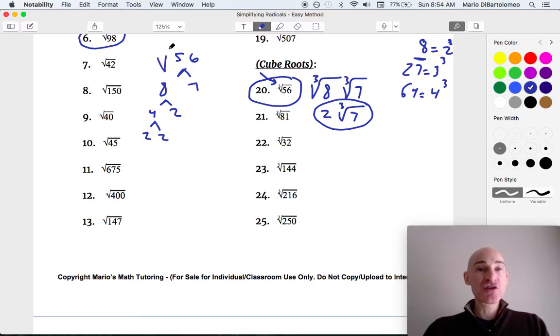And remember, when you're taking the cube root, you're looking for groups of 3 of the same number. So let's see, we've got a group of three 2's here. So that represents a perfect cube. So that's just going to be 2. We just get one of that group. And then we've got a 7 left over.